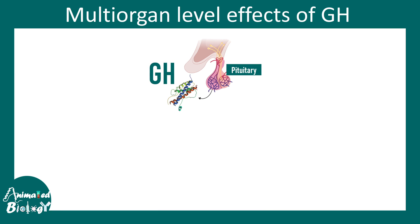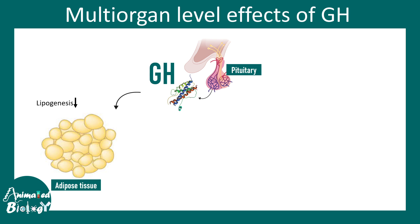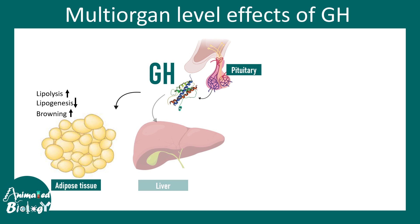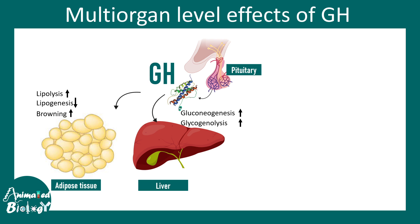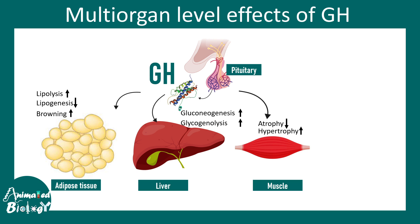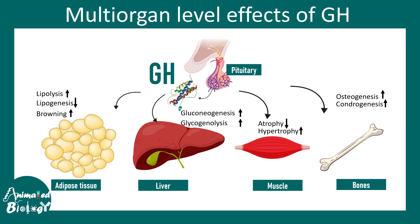To summarize the multi-organ effects of growth hormone: it affects adipose tissue by decreasing lipogenesis and increasing lipolysis; it stimulates the liver to secrete IGF-1, increases gluconeogenesis (making glucose from amino acids and other sources), and promotes glycogenolysis (breaking down glycogen reserves). It decreases muscle atrophy while increasing hypertrophy. It promotes bone growth, osteogenesis, and chondrogenesis.